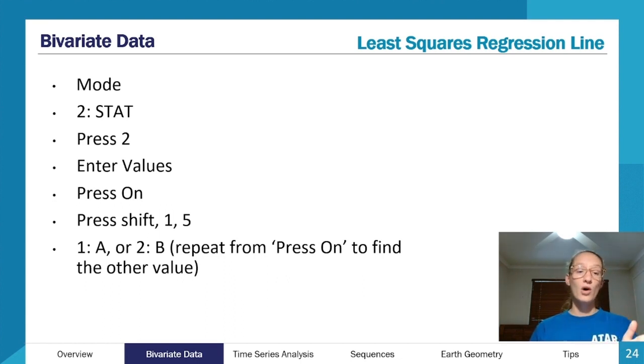It's mode, 2, STAT, press 2, enter your values, press On, press shift 1, 5, then you press 1 which will correspond to a if you're wanting to find out the a value which is the y-intercept, or you press 2 if you're wanting to find out b which is your gradient or your slope.